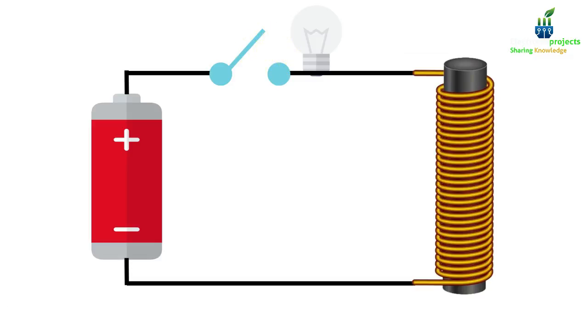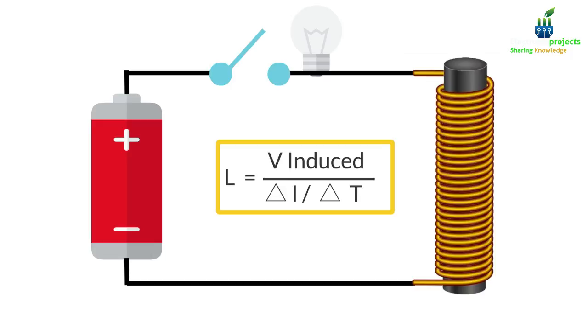Whereas a capacitor uses voltage to store energy, the inductor uses current. Inductance of an inductor is defined as the amount of voltage induced divided by the change in current per second. Therefore, if 1V is induced by a change of 1A in 1 second, there is 1H of inductance.